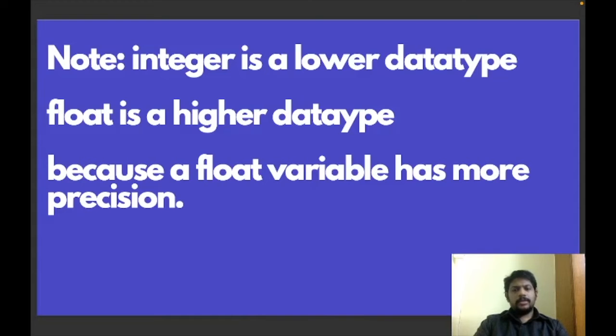To avoid the data loss, what will the interpreter do? It will convert the data type of integer variable to float. And this will be done implicitly. That is why it is called implicit typecasting.